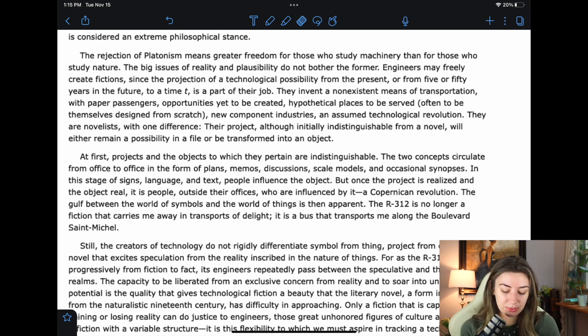So we started out saying engineers and technology is greater than science because science just kind of discovers things, whereas engineers actually make things. This really didn't add anything to the main idea, but it did give us a word, Platonism. Then we come upon this paragraph that gives us this idea that engineers are super creative because they're making these things and they can project things into the future. And they're even better than novelists, more creative because what they start thinking about may actually become an object one day. At first, projects and the objects to which they pertain are indistinguishable. The two concepts circulate from office to office in the form of plans, memos, discussions, skill models, and occasional synopsis.